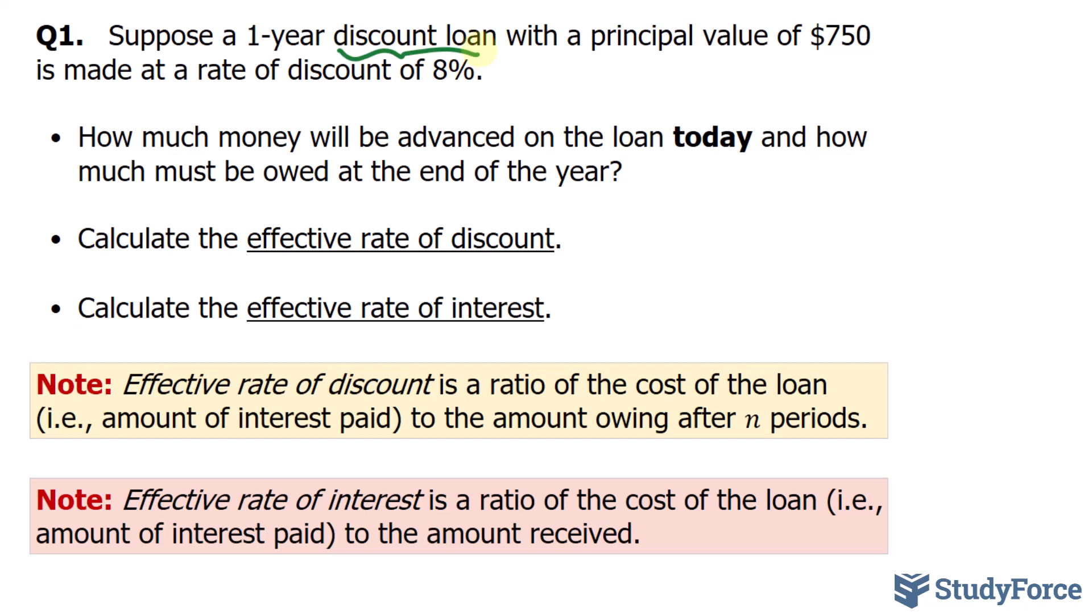The first part asks, how much money will be advanced on the loan today, and how much must be owed at the end of the year? Let's take a look at what's been given. We've been told that the loan will be for one year. We've also been told that the principal is $750, so I'll mark that down as P. And the rate of discount is 8%. We'll simply call that our interest rate for now.